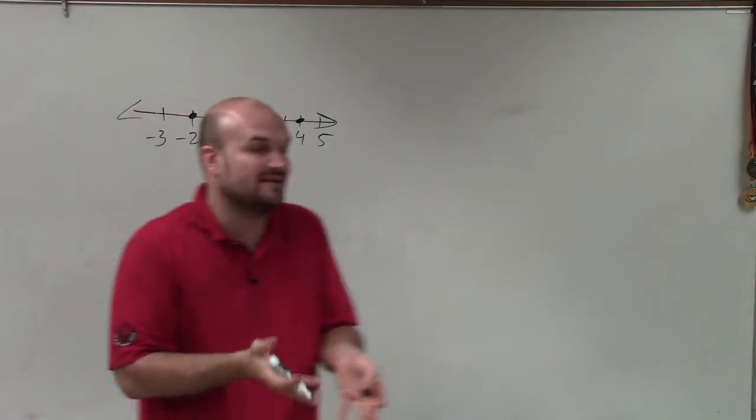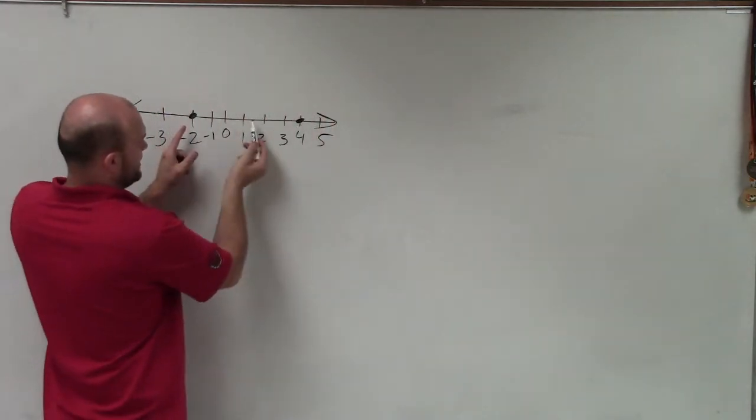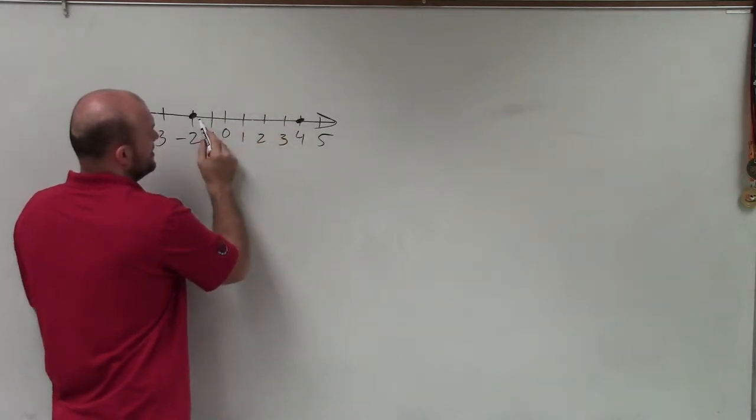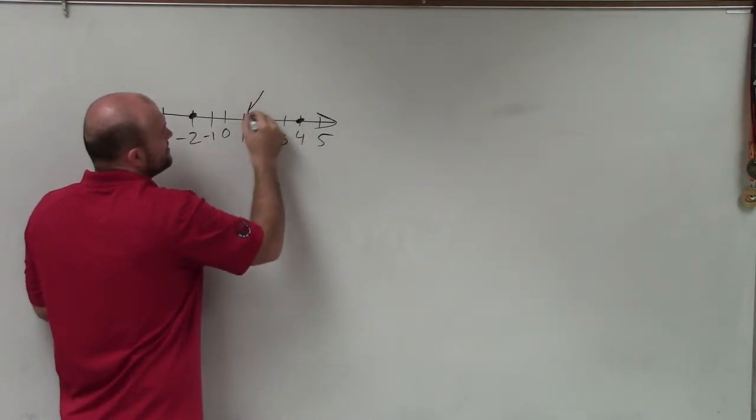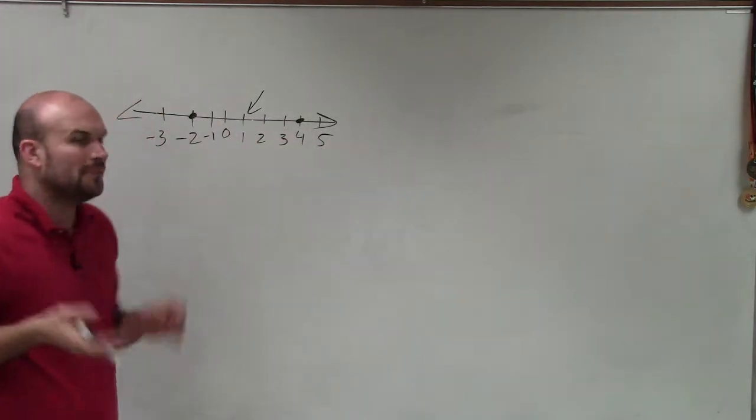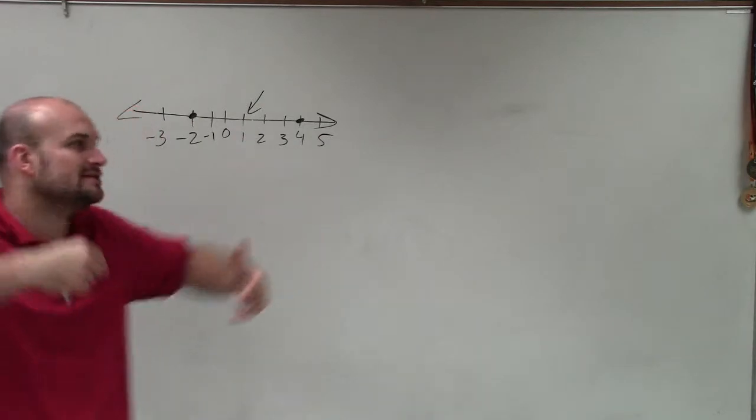Now obviously, if I wanted to find the middle, I could say the middle is going to be somewhere in here. Let's just count: 1, 2, 3, 4, 5, 6. So the middle is going to be right at 1 because it's 3 from negative 2 and 3 from 4. But how algebraically did I do that?